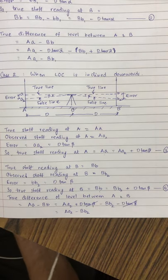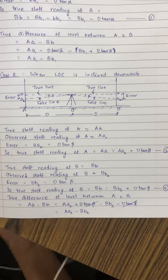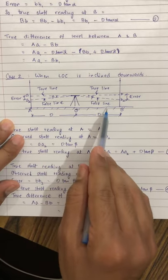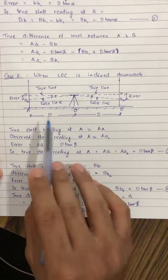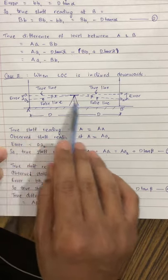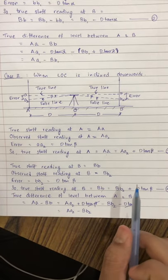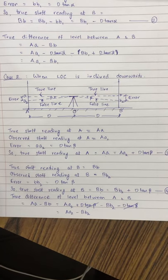Always remember that the level should be placed exactly midway between the backsight and foresight distances to eliminate any error. If placed at unequal distances the error cannot be eliminated, but if placed exactly midway, whatever reading you get on the staff will be the true difference. Thank you so much.